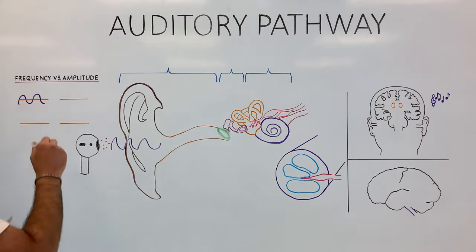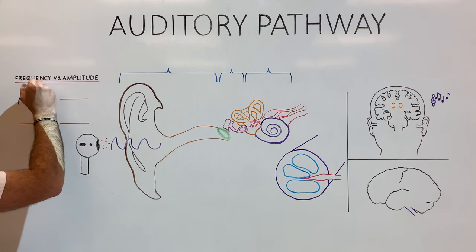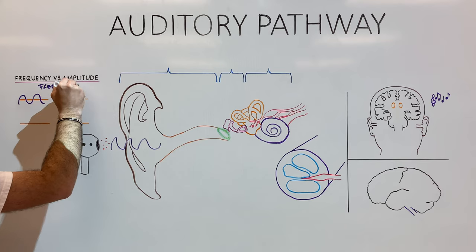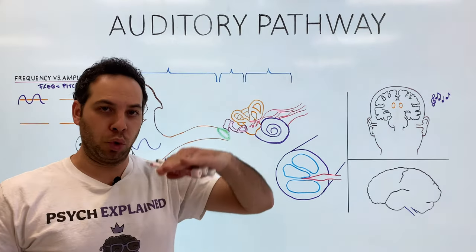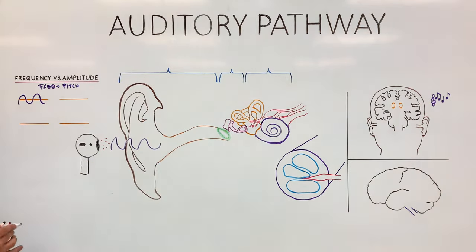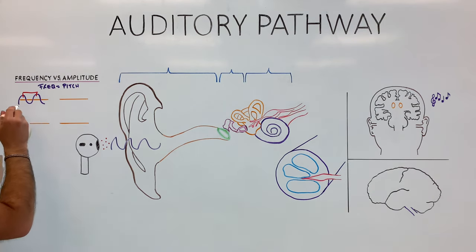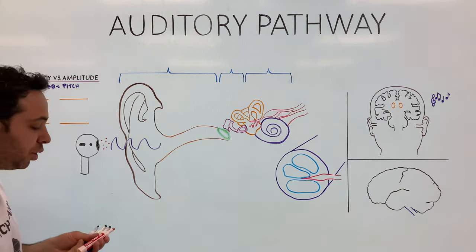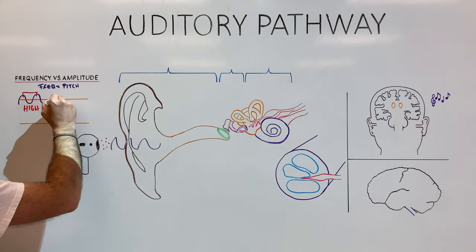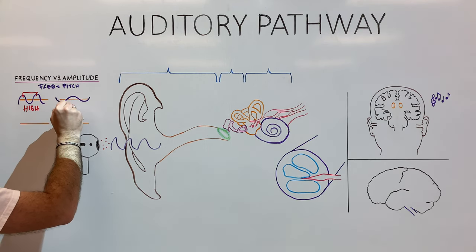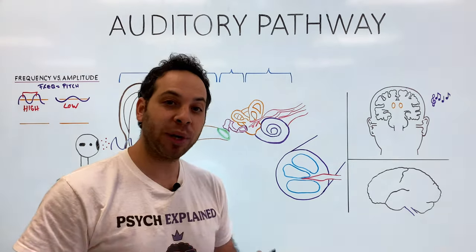Let's start with frequency. Frequency helps determine what we know as pitch. Pitch can be high or pitch can be low. And we determine the pitch by peak to peak, how close these waves are together. Here, they're very close together, and this is going to produce a very high pitch sound, as opposed to something that would be very spread apart. These waves are spread apart, this would be considered a very low pitch, something like a trombone. So pitch is determined by the frequency.